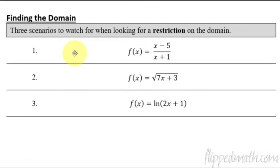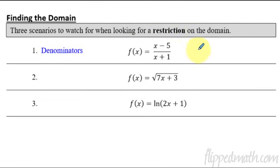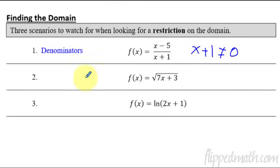The first thing is we're going to look at three different restrictions that usually will pop up for you. The first is if you have a denominator. Whenever you have a denominator with a variable in the bottom, all you do is take that denominator and say it is not allowed to be zero. That's the first restriction — watch out for fractions, and denominators can't be zero.